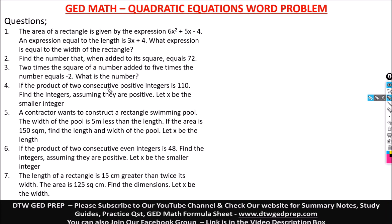Question 4 says: if the product of two consecutive positive integers is 110, find the integers. Assuming they are positive, let x be the smaller integer. When you hear consecutive integers, the first integer is x and the second is x + 1, because consecutive integers differ by 1.